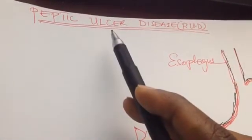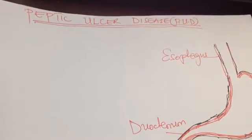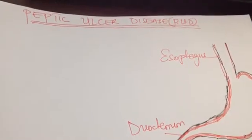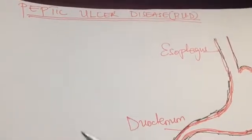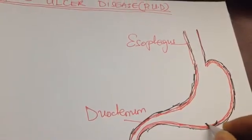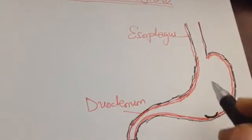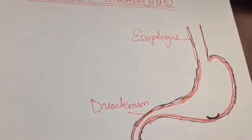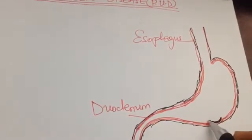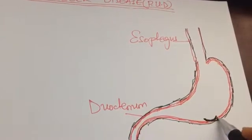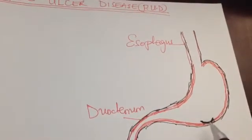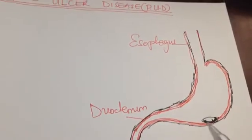An ulcer is like a wound. Just as you can get a wound on your hand from a nail or knife, ulceration in the stomach is a kind of punch-out defect. The stomach has layers: the mucosa, muscularis mucosa, and adventitia. In peptic ulcer, almost all layers are involved, down to the adventitia.